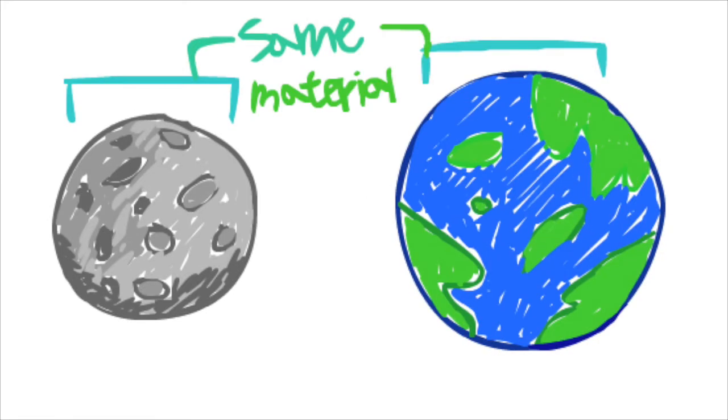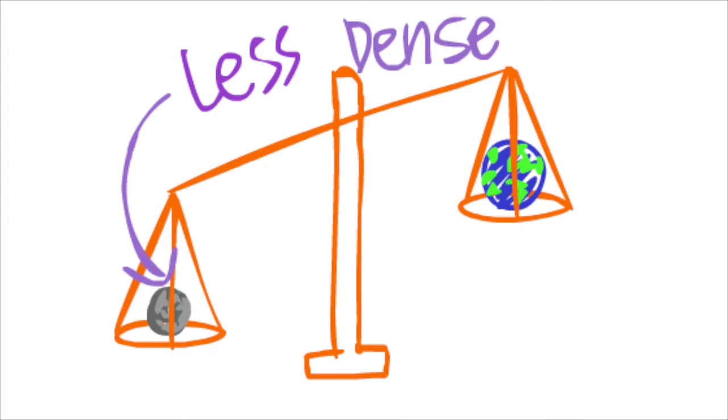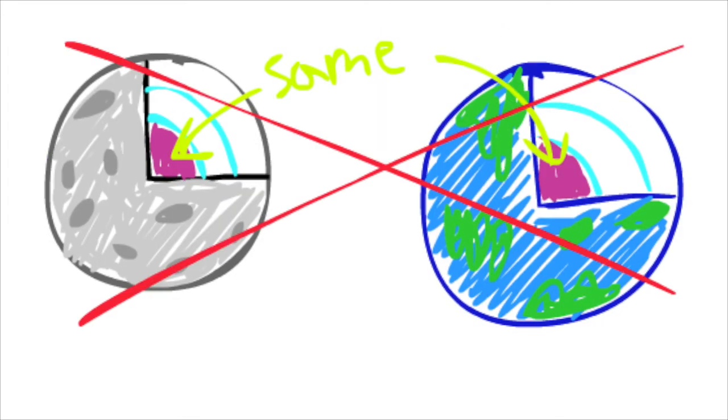This explains why the moon and the Earth are mostly made of the same materials and the moon is at the present location. However, the moon is less dense than the Earth, which wouldn't be the case if both of them started with the same heavy elements at the core.